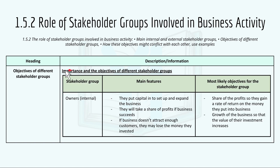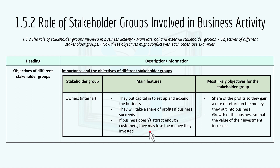Looking at the importance and objectives of different stakeholder groups. For owners, an internal stakeholder group: the main feature is they put in capital to set up and expand the business, they will take a share of the profit, and if the business doesn't attract enough customers they may lose the money they invested. Their most likely objective is a share of profits so they gain a rate of return on their investment, and growth of the business so that the value of their investment increases.